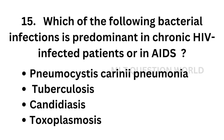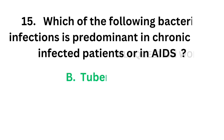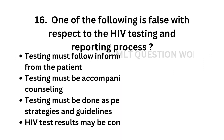Question number 15: Which of the following bacterial infections is predominant in chronic HIV infected patients or in AIDS? Option A, Pneumocystis jirovecii pneumonia; option B, Tuberculosis; option C, Candidiasis; option D, Toxoplasmosis. The correct answer is option B, Tuberculosis. Tuberculosis is predominant in chronic HIV infections.